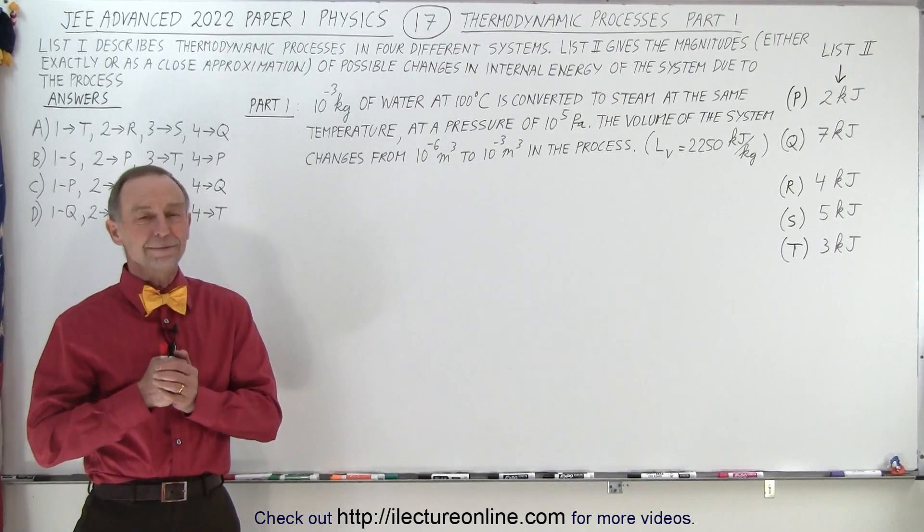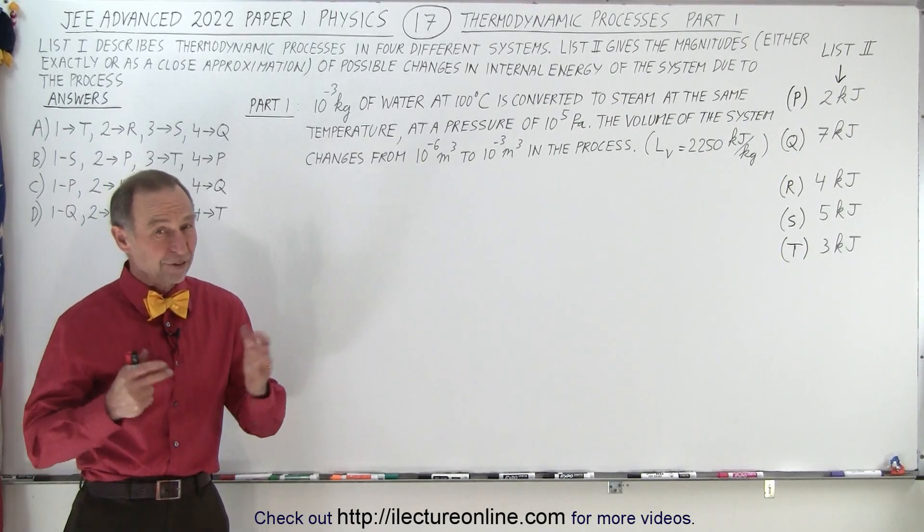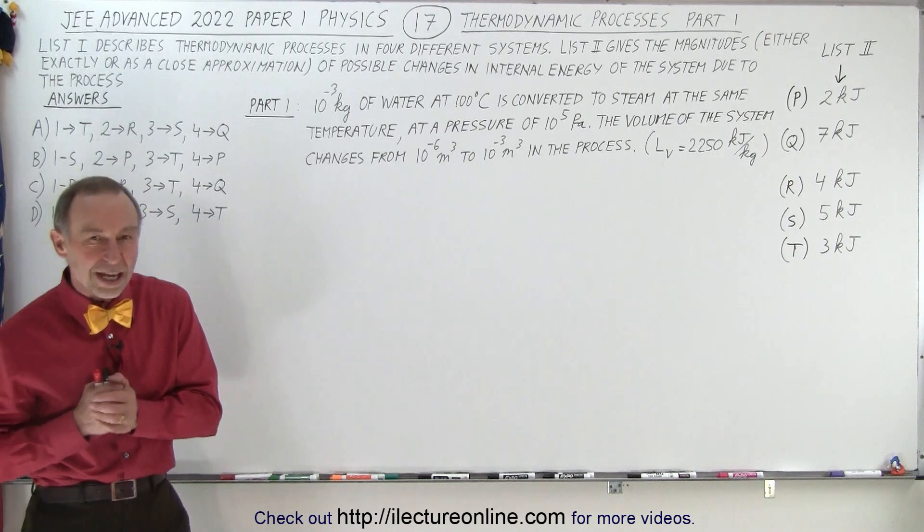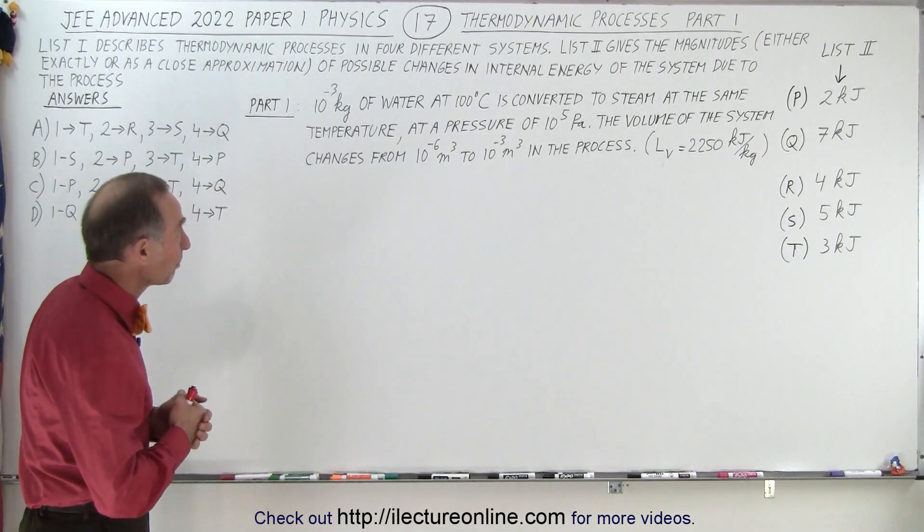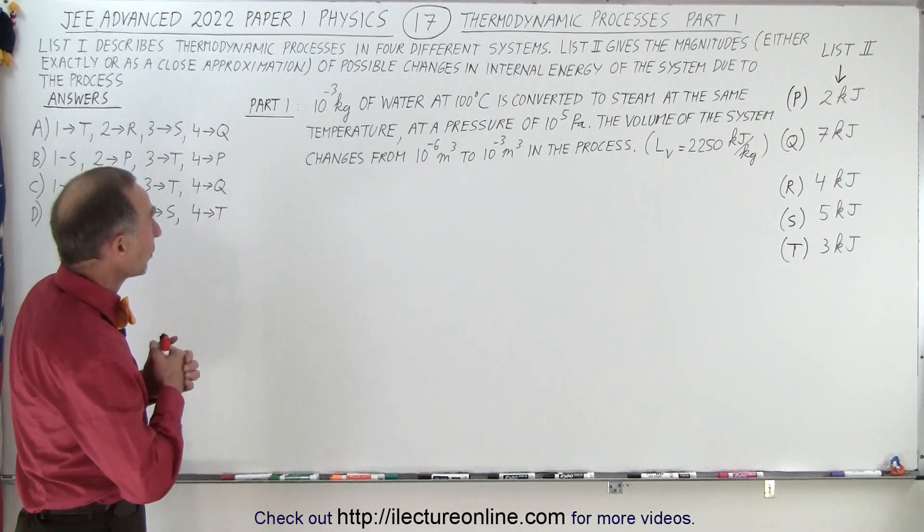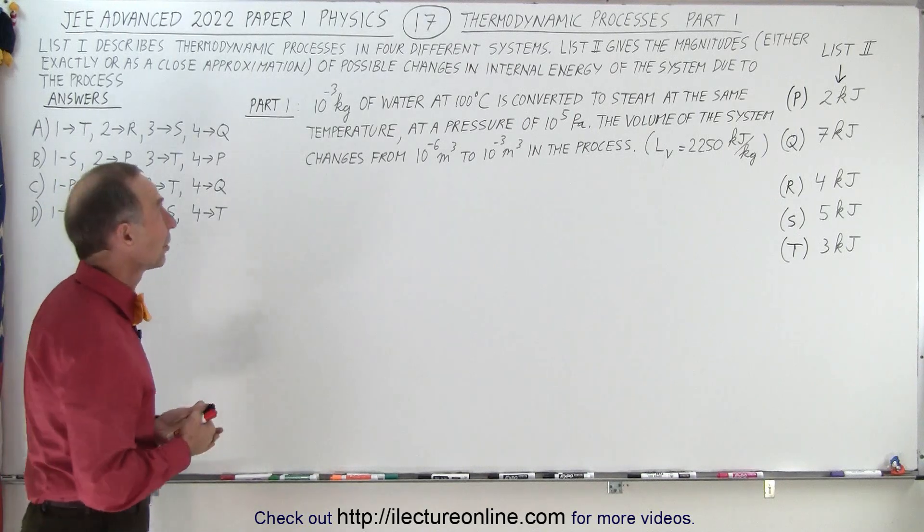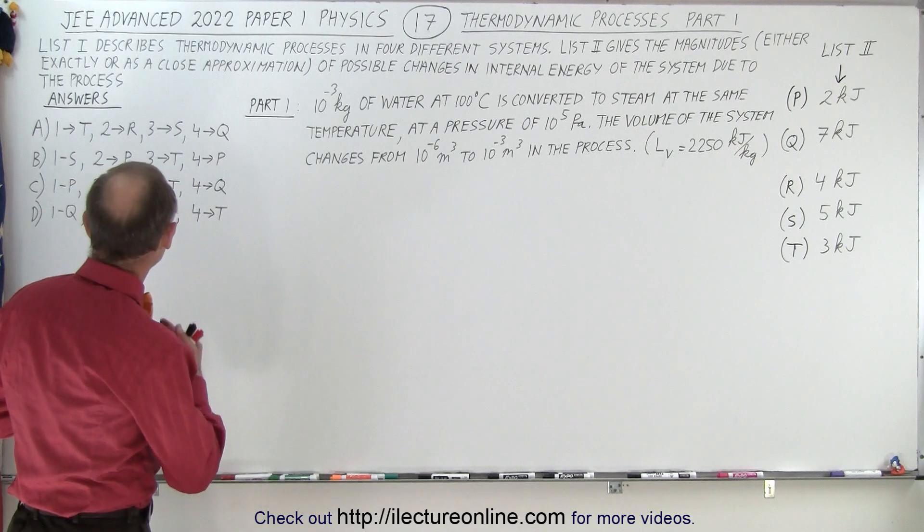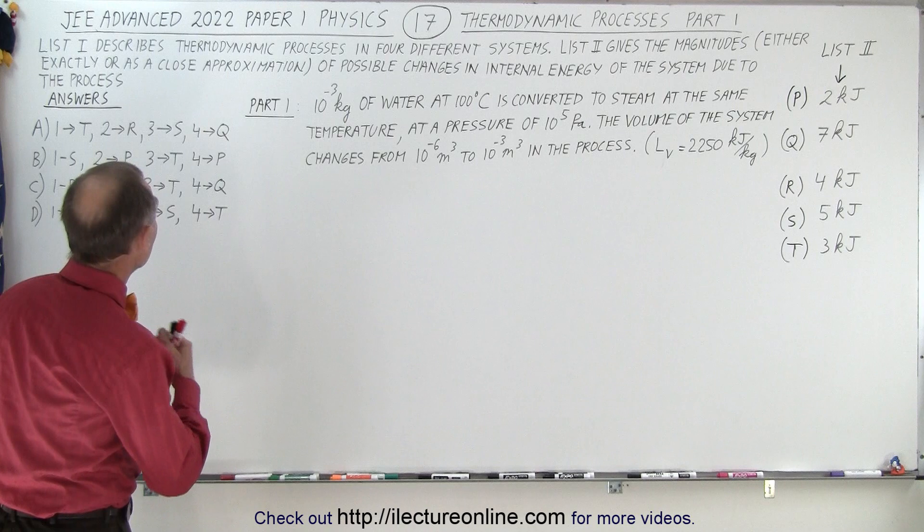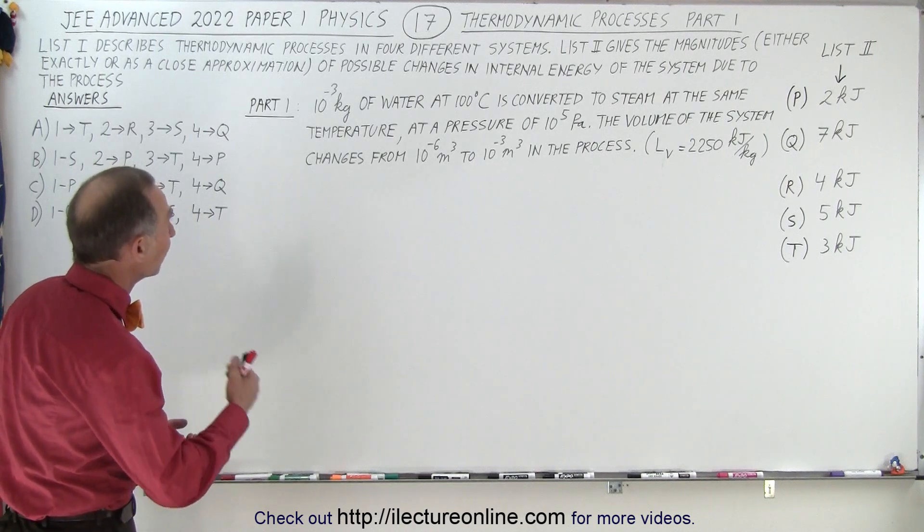Welcome to ElectroOnline. Our next problem on the physics portion of the JEE Advanced 2021 Paper 1 deals with thermodynamics. List 1 describes thermodynamic processes in four different systems.